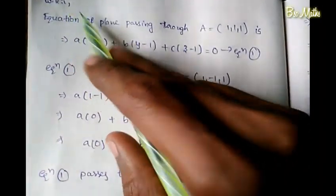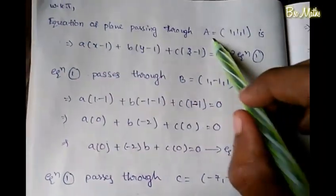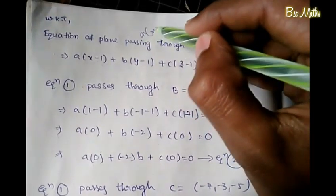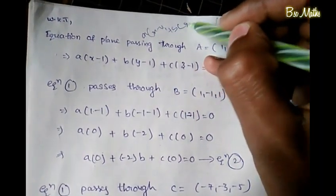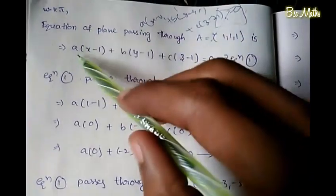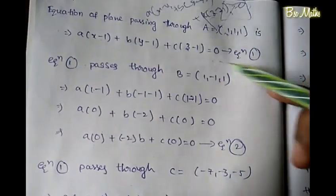We will use the formula. The equation of the plane passing through point A (1, 1, 1) is: a(x - x1) + b(y - y1) + c(z - z1) = 0. Substituting x1, y1, z1, we get: a(x-1) + b(y-1) + c(z-1) = 0. This is equation number 1.